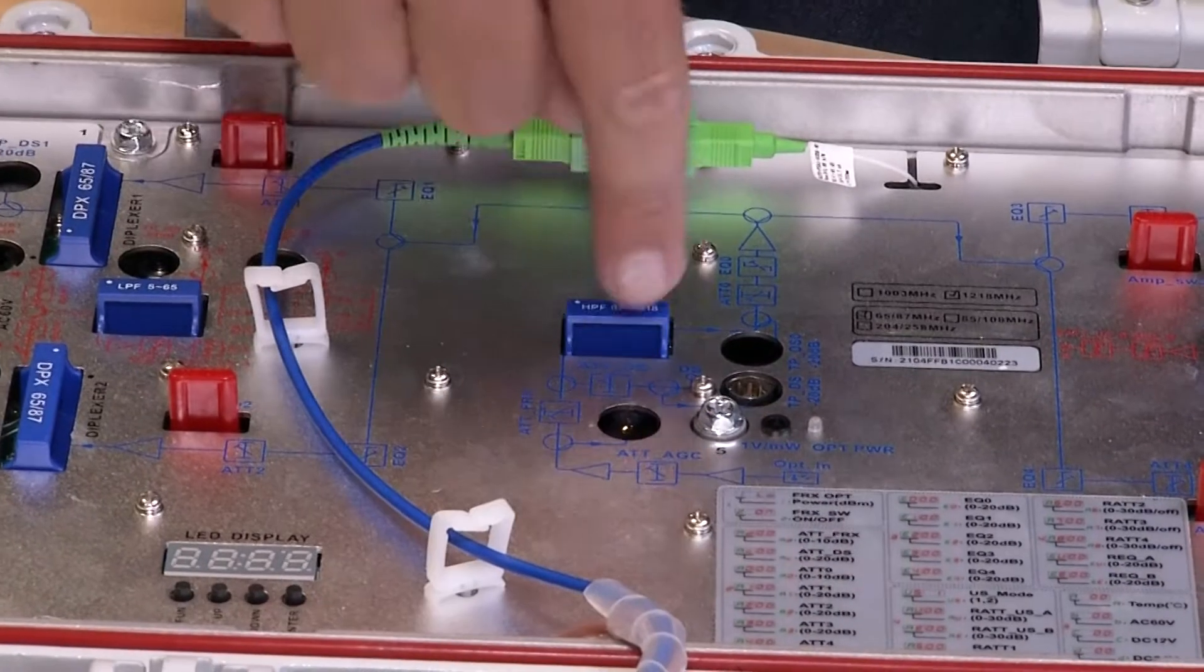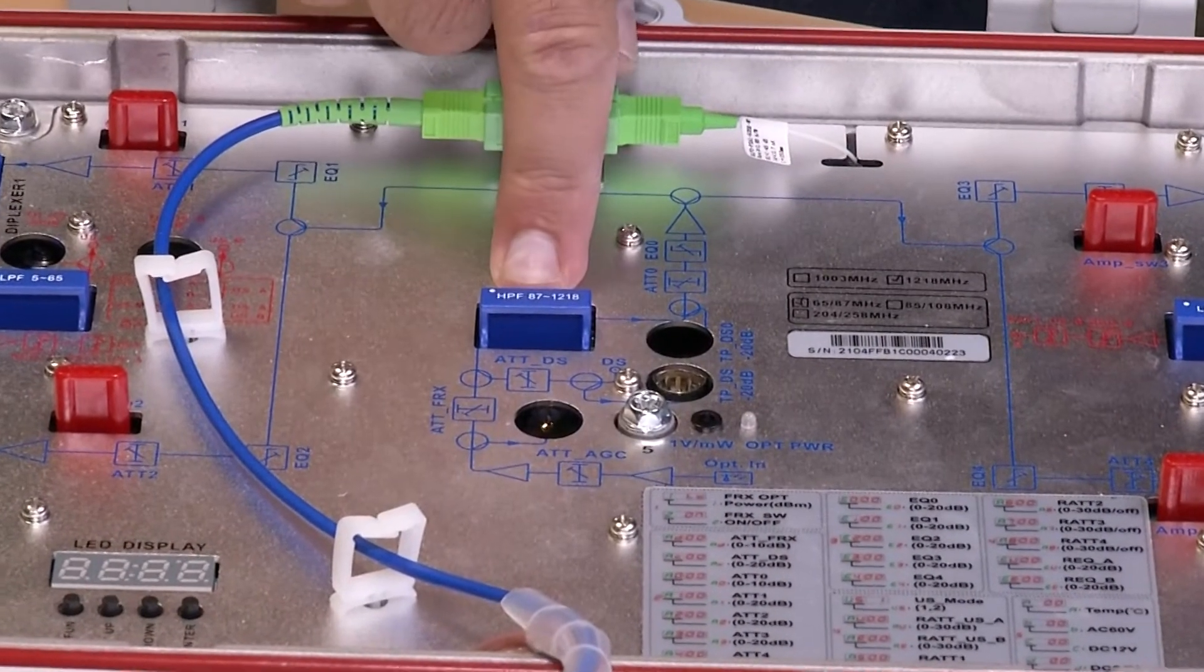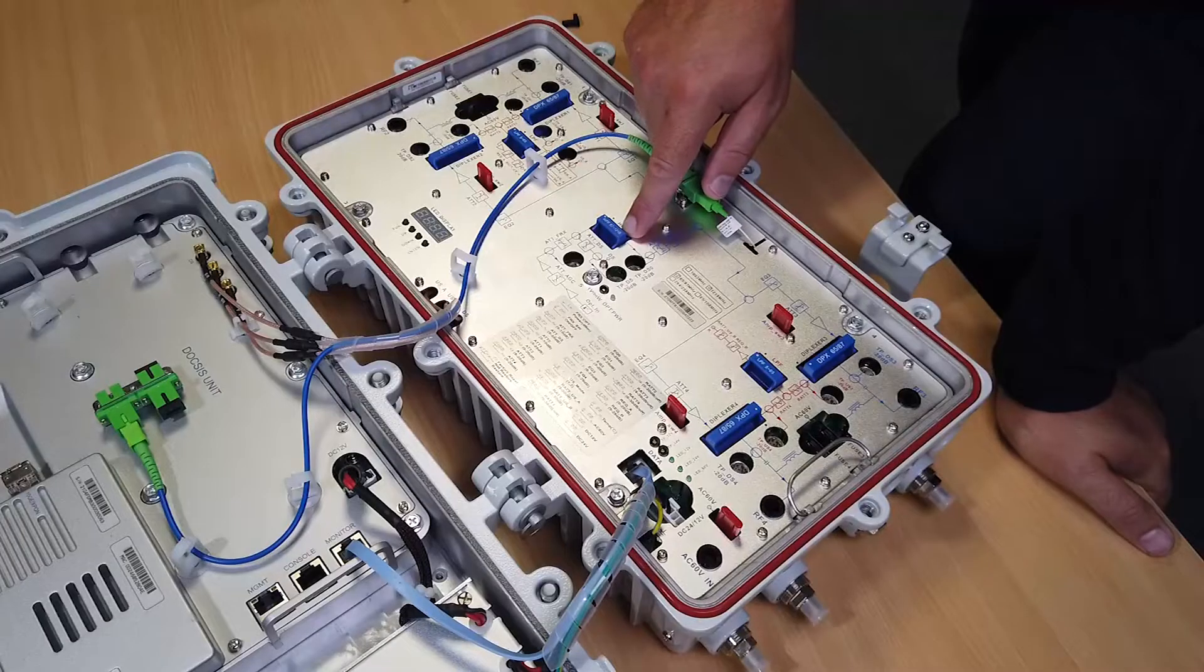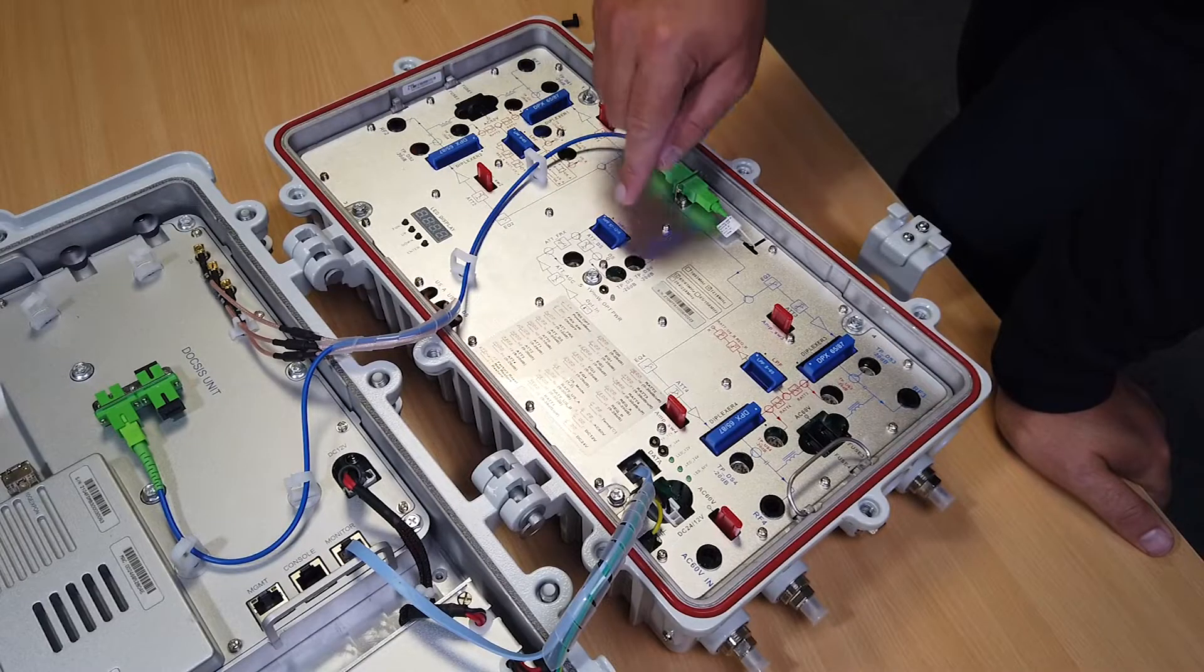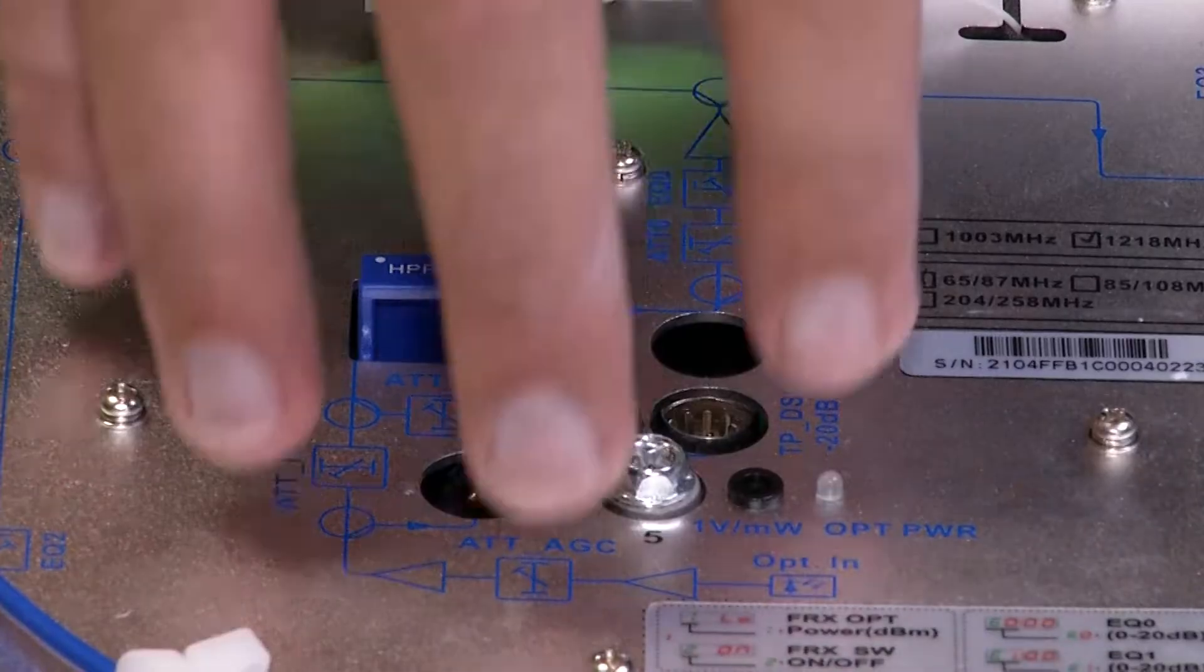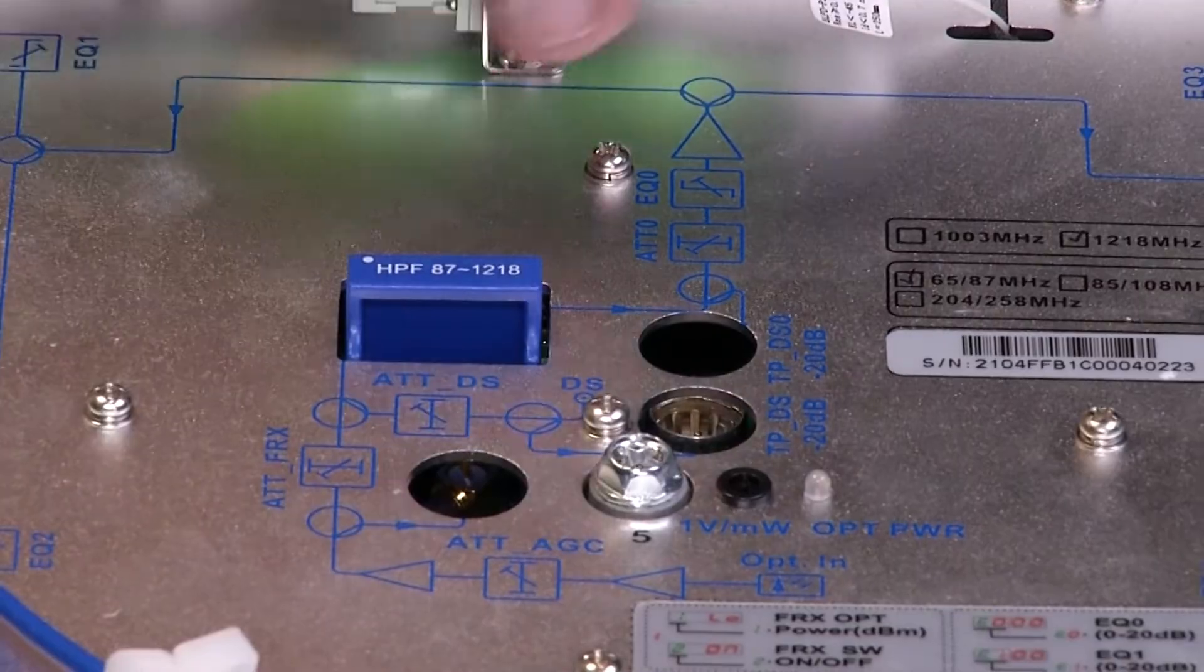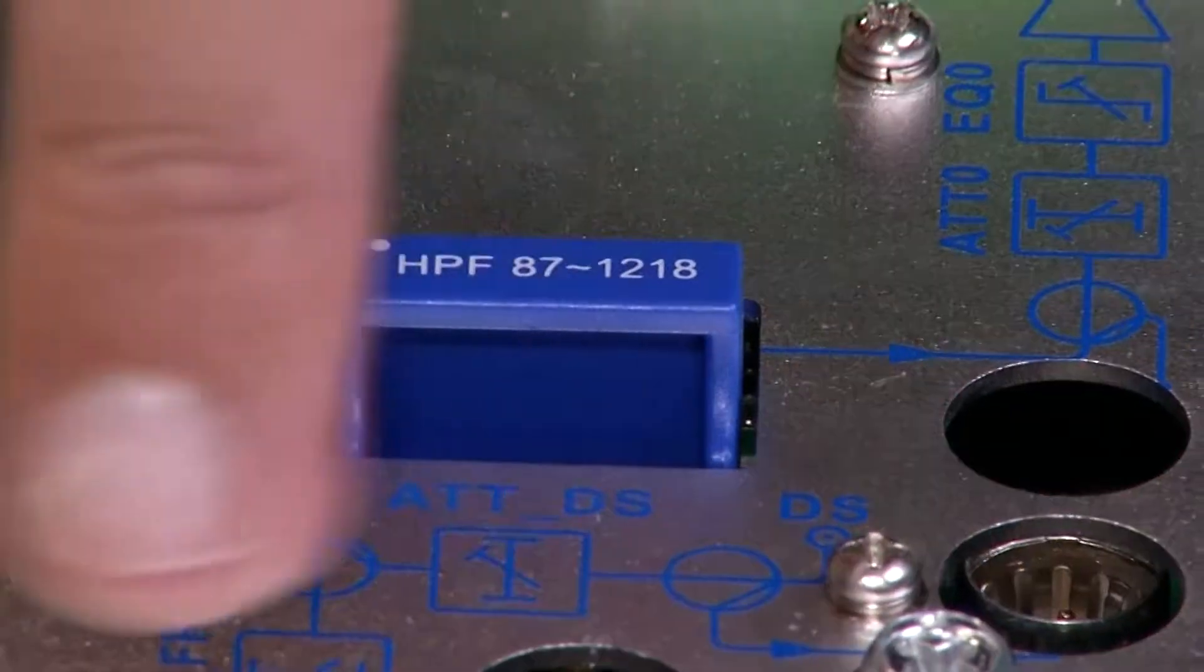The DOCSIS downstream is mixed with the TV signal here. This is where you can connect the high-pass filter. The 87 to 1218 MHz is plugged in here. But there are also high-pass filters such as 200 MHz to 1218 MHz. In the EU area, this one is used most.